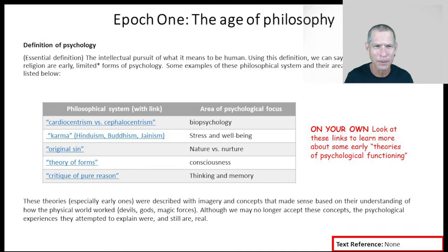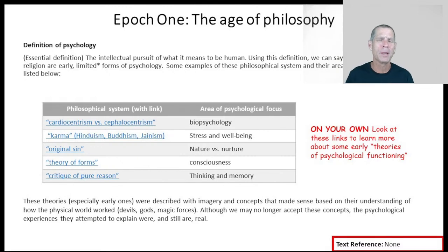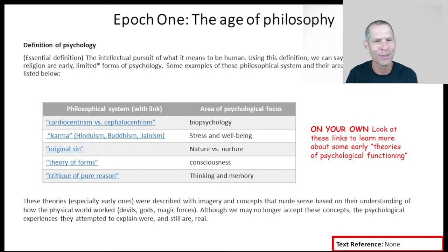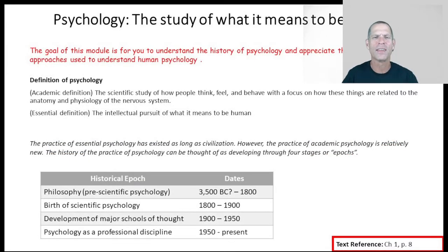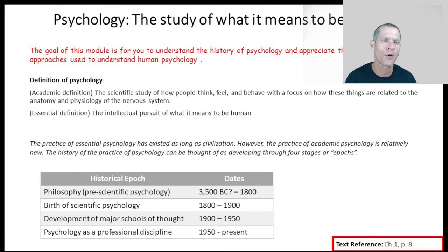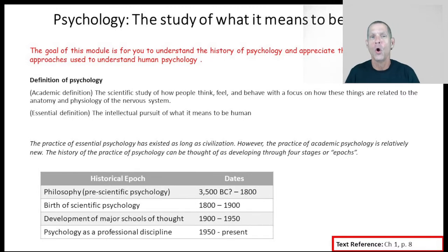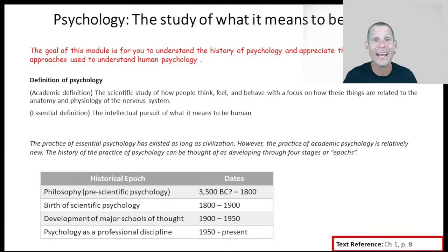Through thousands of years, people have asked philosophical questions: what makes a human being a human? How do they think? How do they feel? How do they behave? Even though we think of psychology as a relatively new science, people have been asking philosophical questions for thousands of years. So the first epoch — the first period of psychology — is what we might call the philosophical or pre-scientific brand of psychology. That lasted from as far back as we have recorded documents up to the 1800s, roughly 3500 BC to 1800.